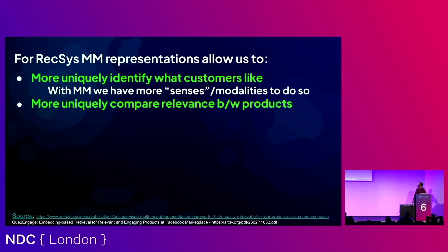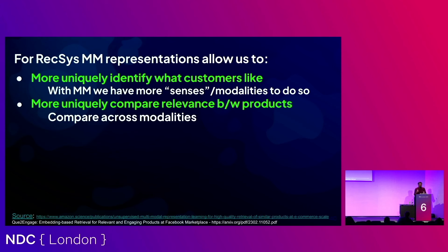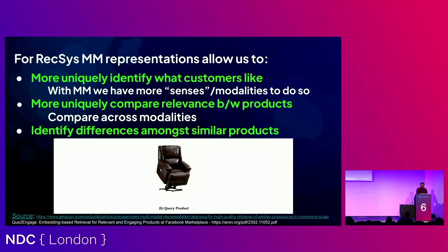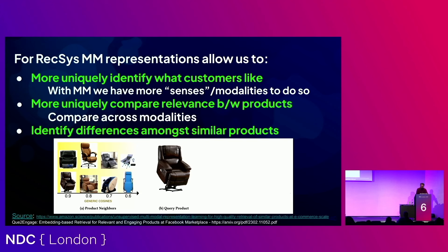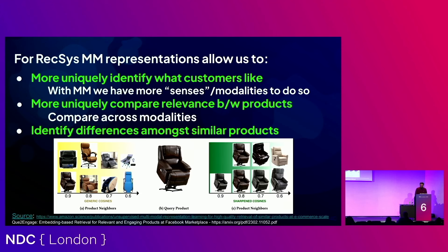It also allows you to uniquely compare relevance between products — not just description to description but description to the way it looks and the way it feels. If you go into Amazon and say 'I want something that looks like this couch', without multimedia search you'd get back similar things you can sit on, but not exactly what you asked for. With multimedia search you get back things that not just are described the same way but also look the same. So you can do better, more relevant search in your applications.